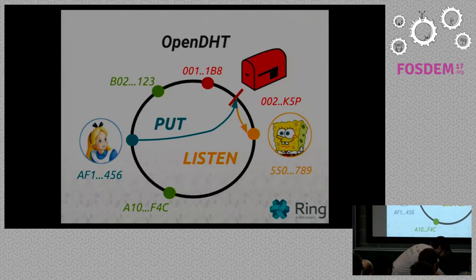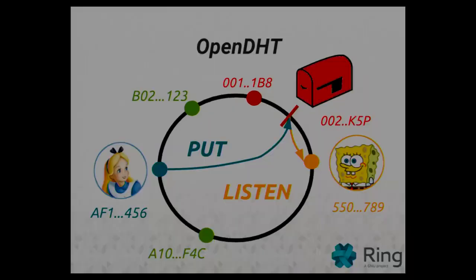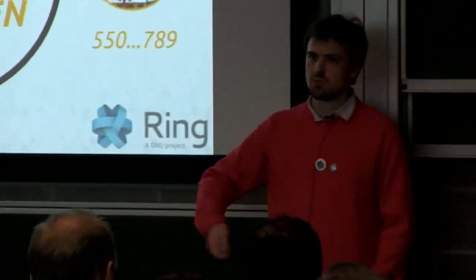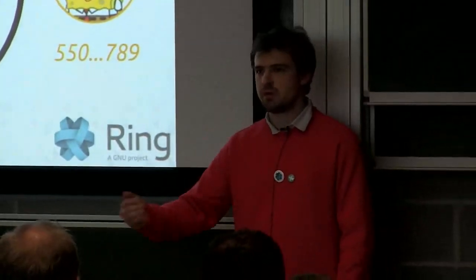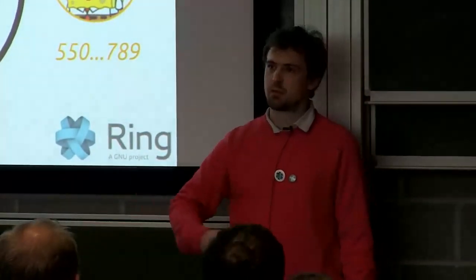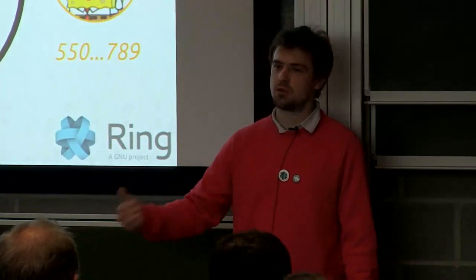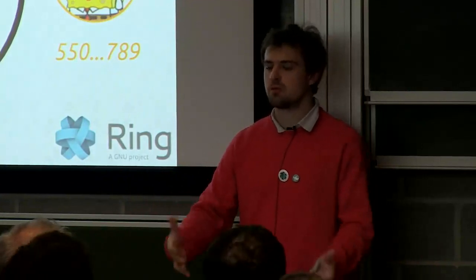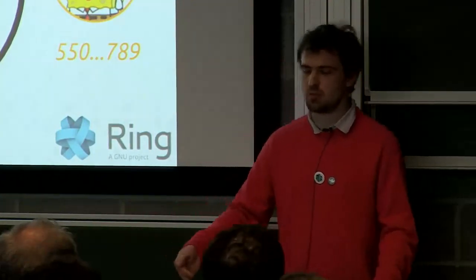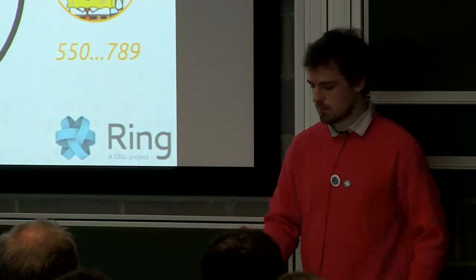Compared to the DHT used in BitTorrent, in Ring we implemented a new feature called Listen. You can ask other nodes to be informed of a change of value at some given hash. So when you receive an incoming call, you won't have to do polling every second. You will directly receive a network packet from other nodes saying there's a new value, and then you'll see that someone is trying to call you.